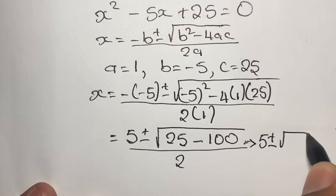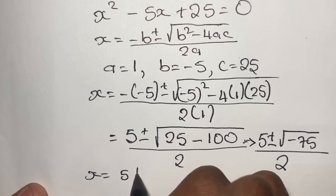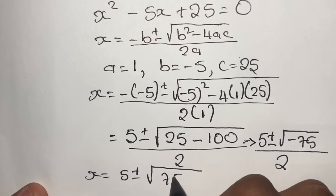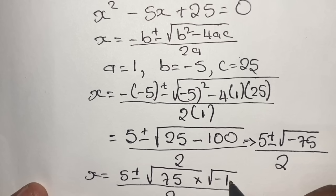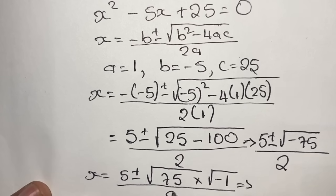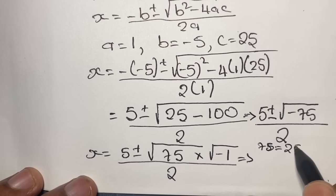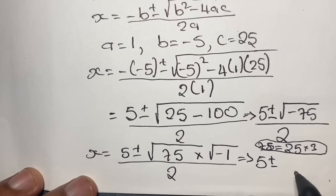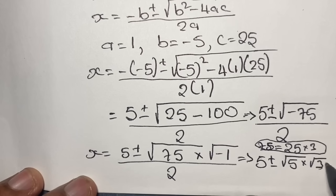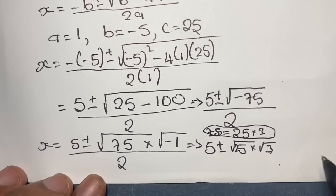We rewrite this as 5 plus or minus the square root of negative 75, all over 2. From here, x equals 5 plus or minus the square root of 75 times the square root of negative 1. Looking at the factors of 75, we take 25 and 3, giving us x equals 5 plus or minus the square root of 25 times the square root of 3, times the square root of negative 1, all over 2.